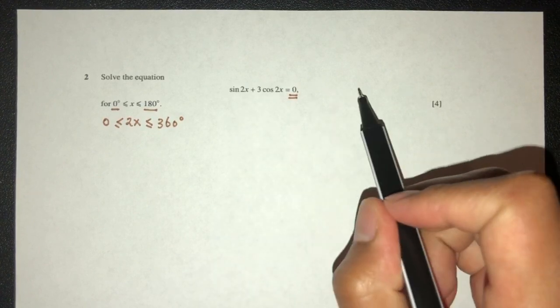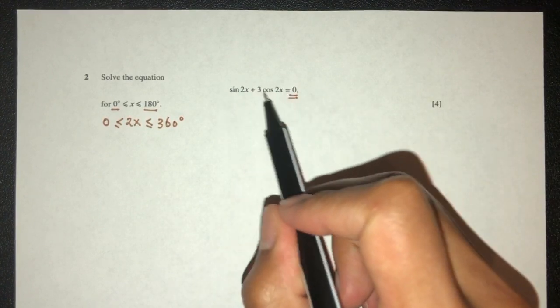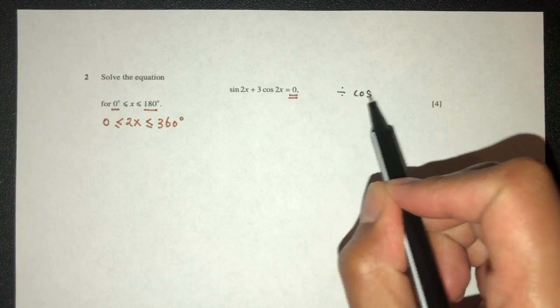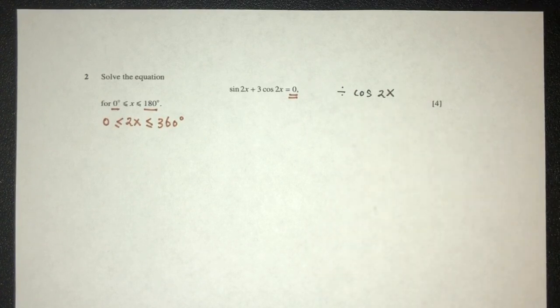So the idea is that whenever we have sine and cos in one equation, we always divide by cos. So here we have cos 2x, so we divide by cos 2x.